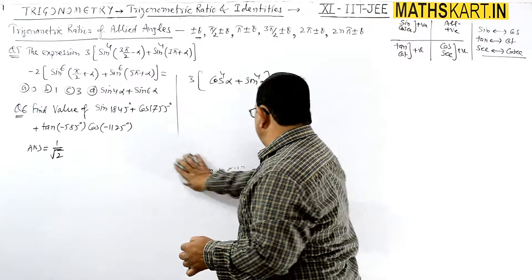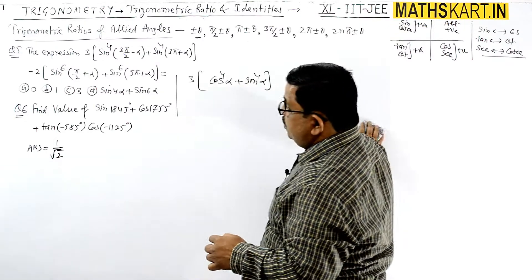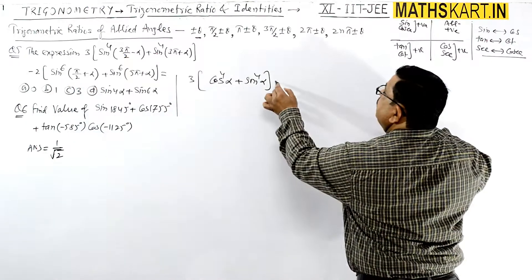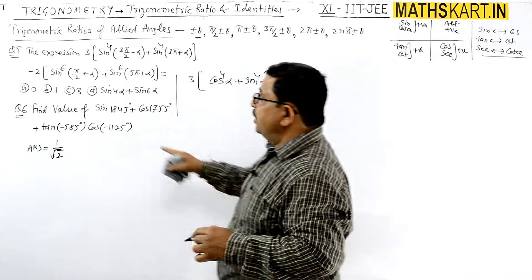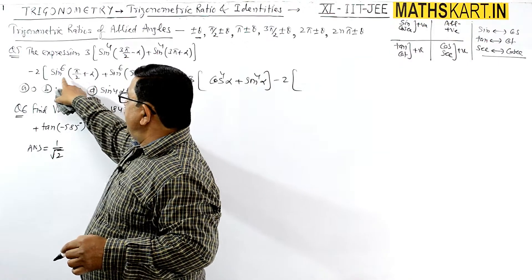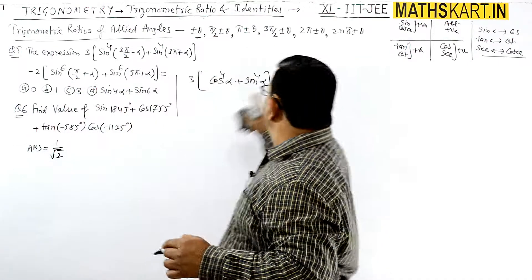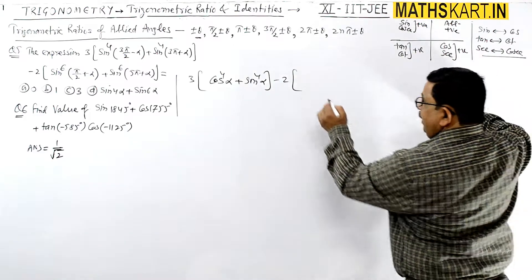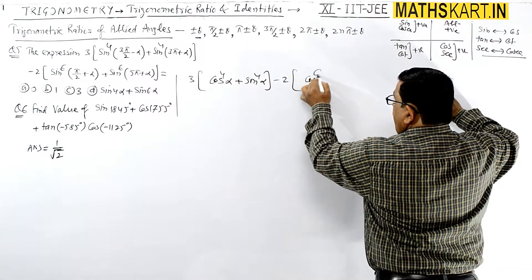Next value we have to calculate. Minus 2 times as it is, and sin(π/2 + θ) goes to second quadrant, so it directly becomes cos. So we will get cos^6 α.